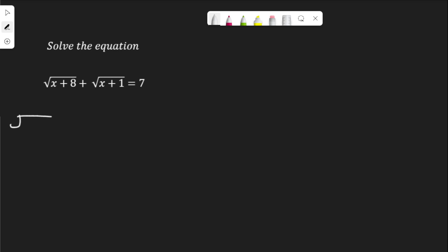If I have root x plus 8 plus root x plus 1 equal to 7, let me start by moving one of these to the other side. I want to have only one radical on one side. I have root x plus 8 equal to 7 minus root x plus 1.